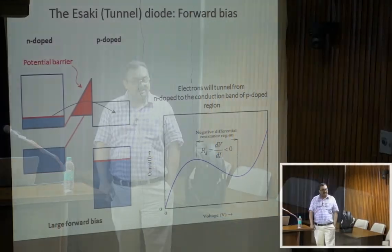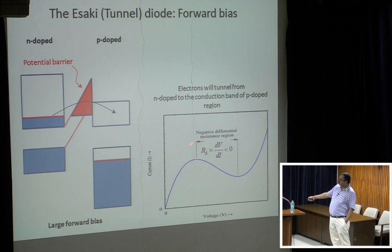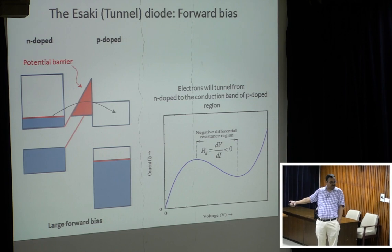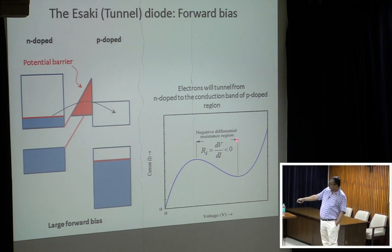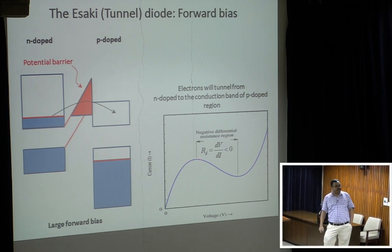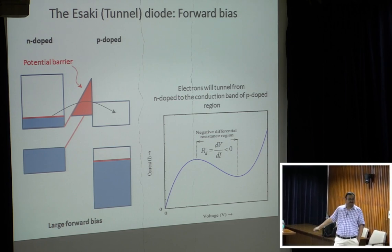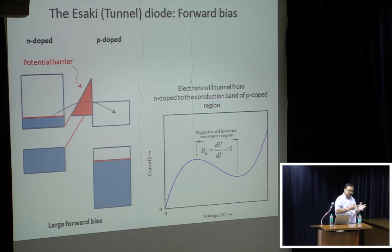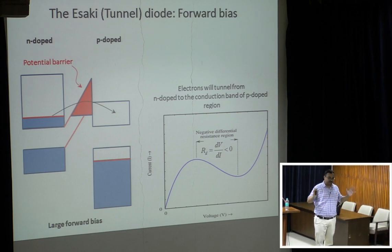This current-voltage characteristic is extraordinary: in one region, increasing voltage causes the current to decrease. The differential resistance dV/dI is negative in that region, breaking Ohm's law entirely — current is no longer proportional to voltage. This Esaki diode characteristic was the first convincing demonstration that electron tunneling occurs in solids. Its immediate practical application was for oscillators: placing an Esaki diode biased into its negative resistance region in an LC circuit compensates the circuit's resistance, enabling sustained oscillation.